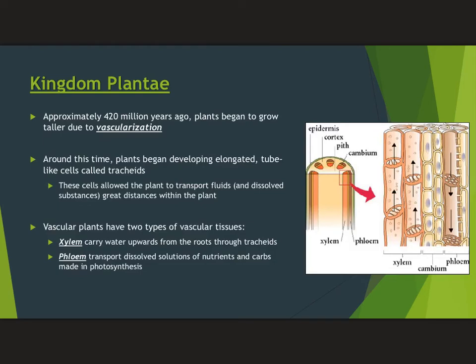About 420 million years ago, plants became taller because they vascularized. They developed elongated cells — almost like straws running through their tissue — which allowed them to transport fluids between tissues. You may have heard of xylem and phloem: xylem carries fluids up the plant, while phloem carries fluids from the leaves to other parts of the plant. Xylem definitely carries fluids up from the root system into the other parts of the plant.